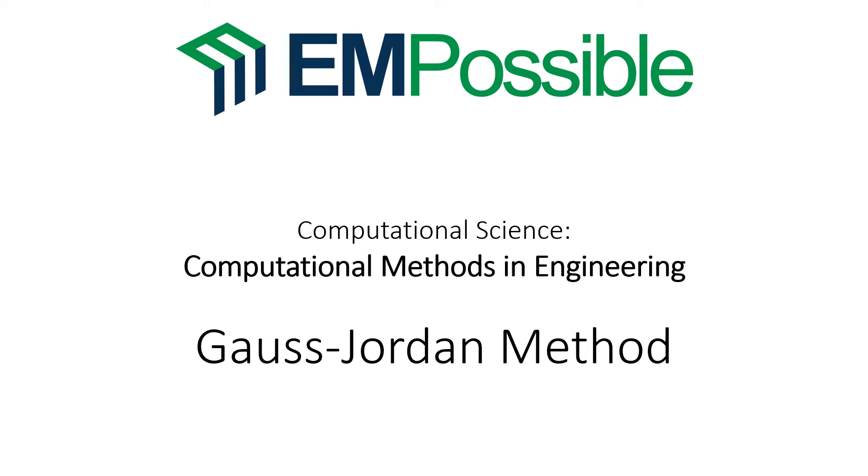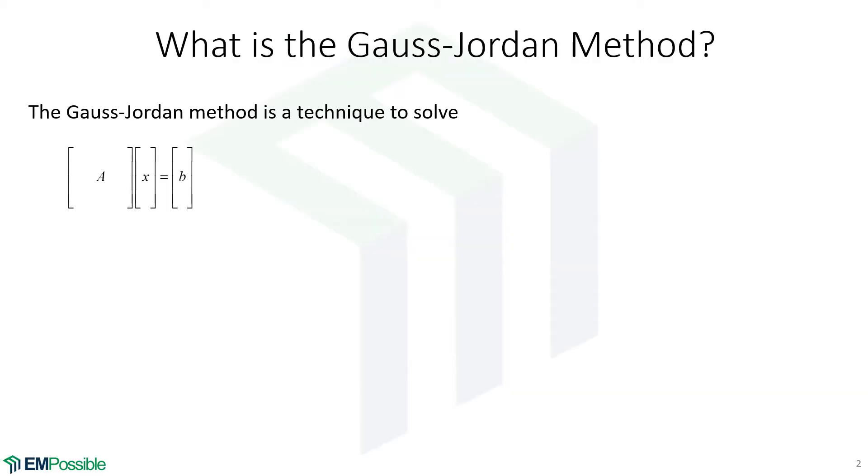The Gauss-Jordan method is yet another technique for solving an AX equals B problem. Interestingly, it can also be used to calculate matrix inverses. This is a very good method that we can solve linear algebra problems like this by hand, and we can even solve moderately large problems by hand or this can also be done by a computer code.